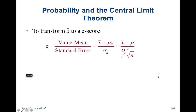Now, the z-score formula has to change because the standard deviation had to change — but that's all that changes. It's still value minus mean divided by the standard deviation or standard error. In this case, the standard deviation is divided by the square root of n because we are finding a z-score dealing with sample means.